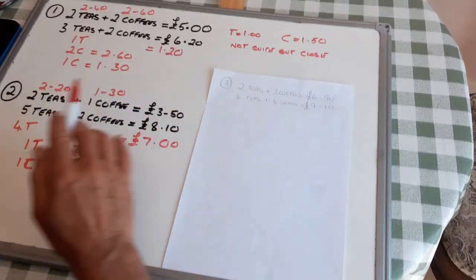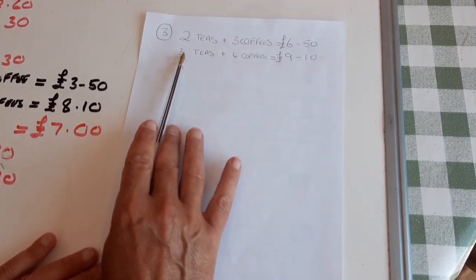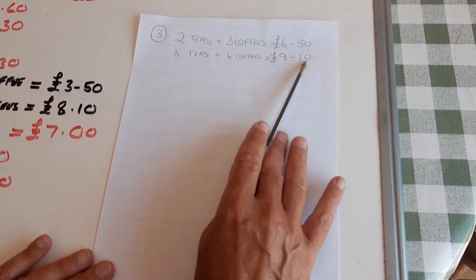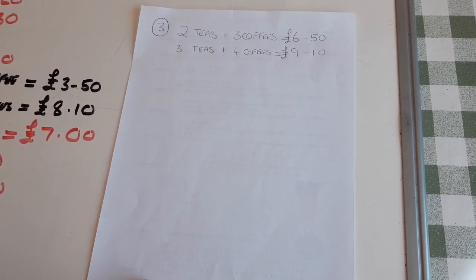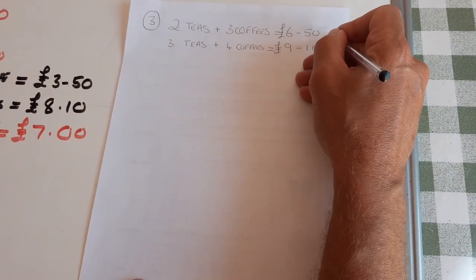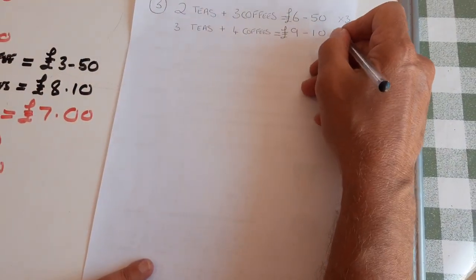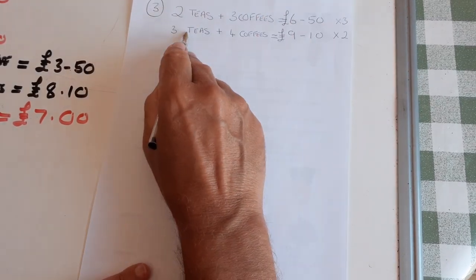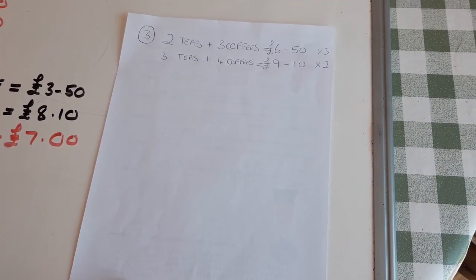Two teas and three coffees is £6.50. Three teas and four coffees is £9.10. But I'm going to times that by three to give me six teas. And times that by two to give me six teas. And then I can work that one out.